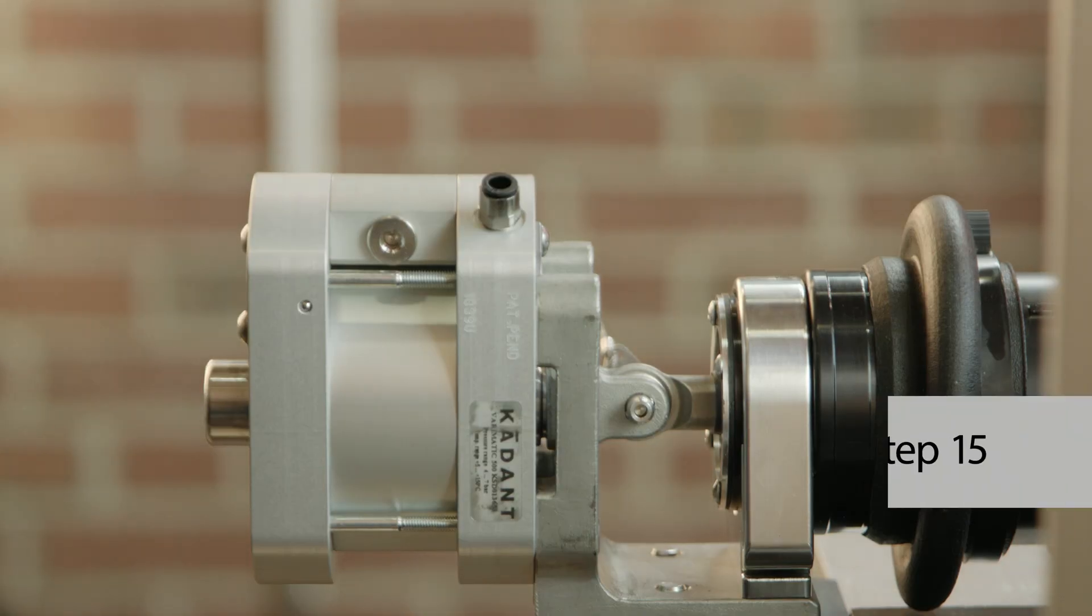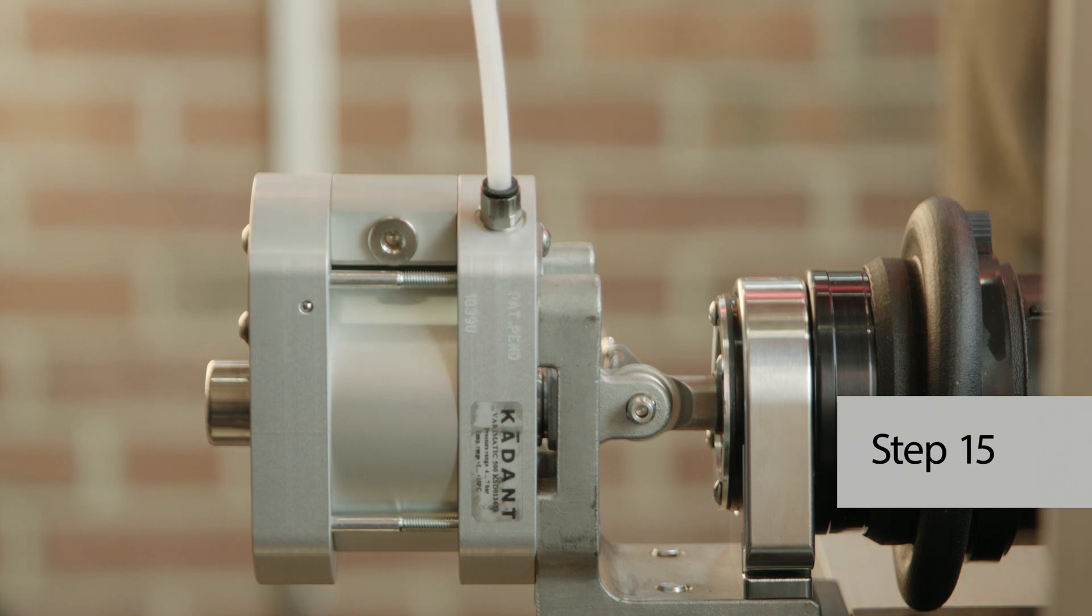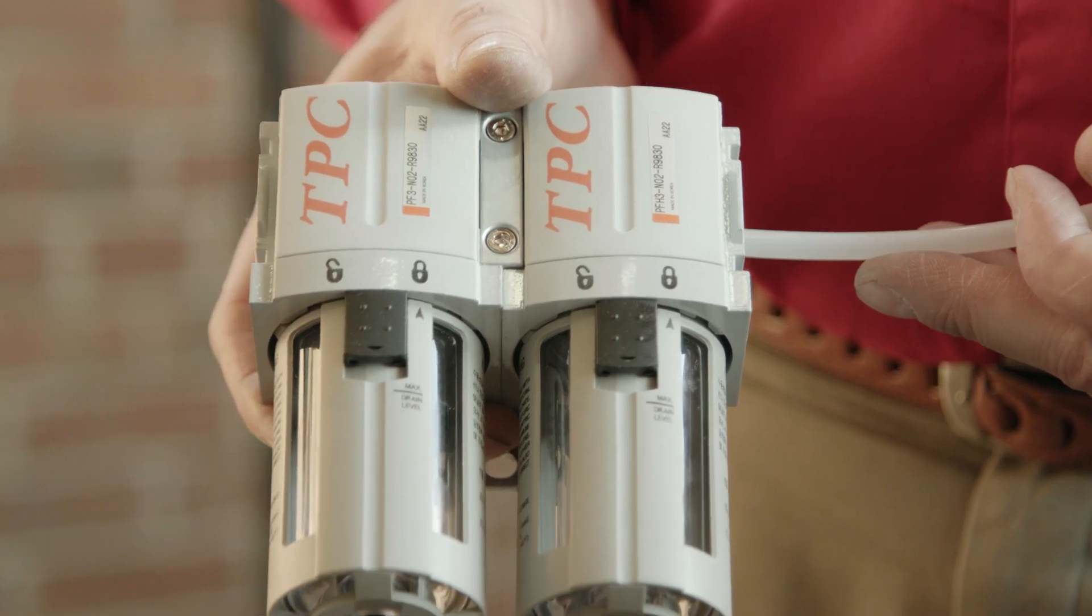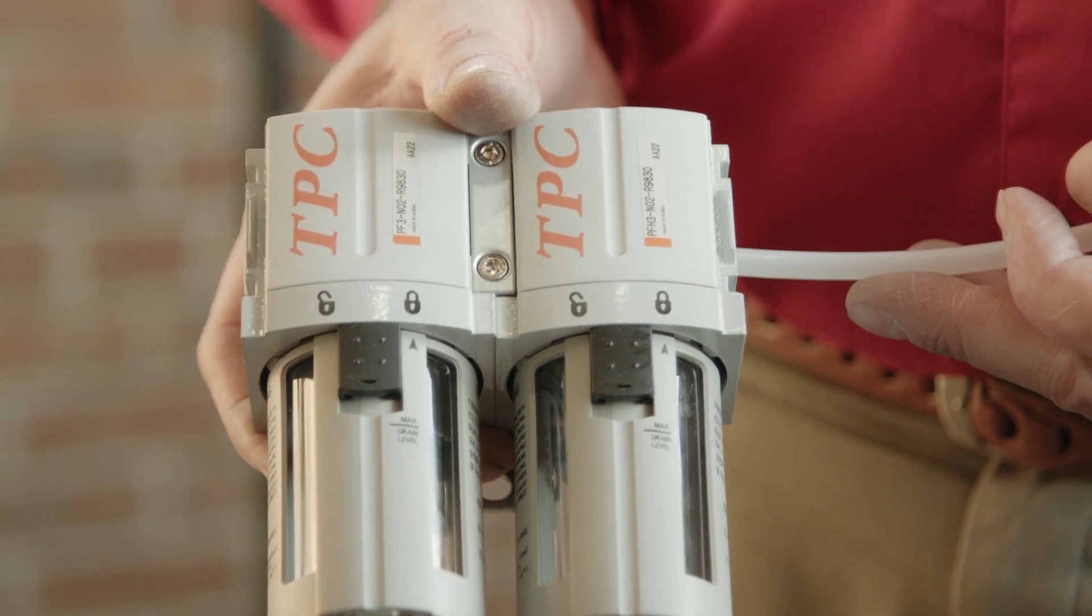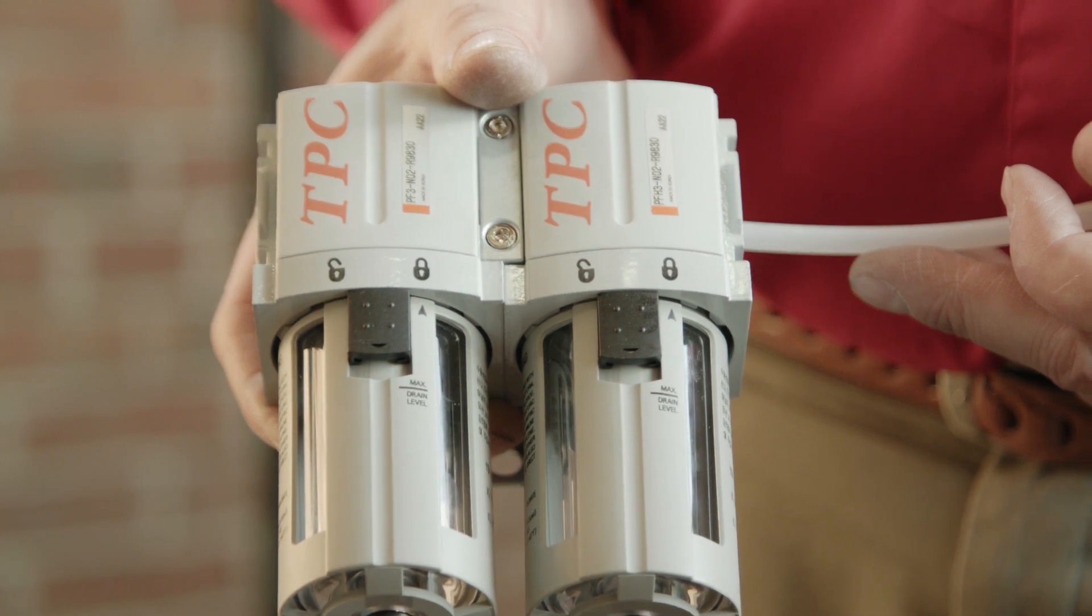Step 15, make compressed air connections using flexible tubing to the flow tubes and oscillator per cadence schematic. A filter regulator must be installed to protect the oscillator. A shutoff valve is also recommended. Routinely drain and clean these filters to ensure continuous operation.